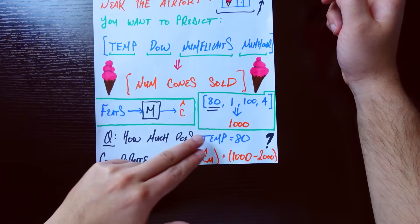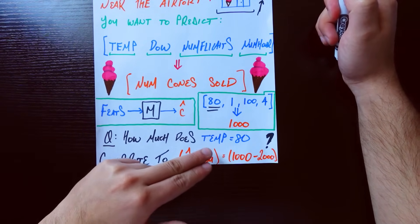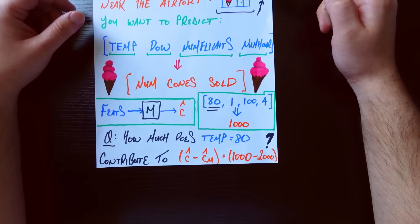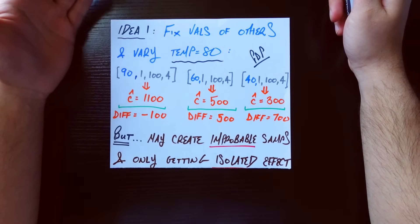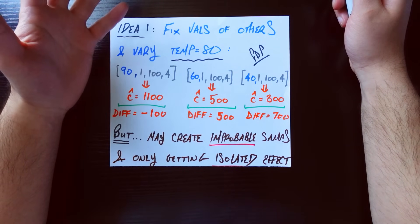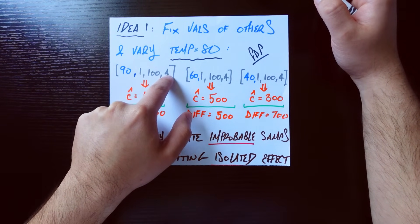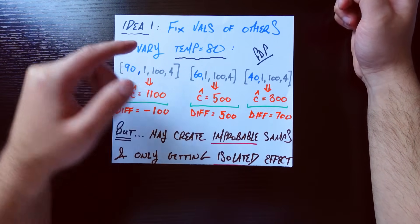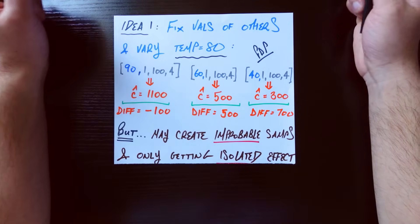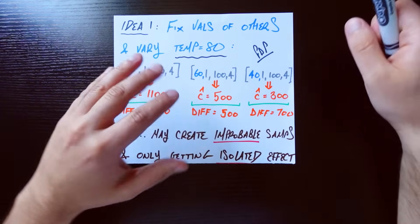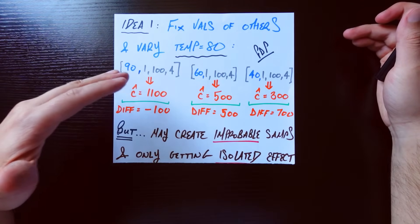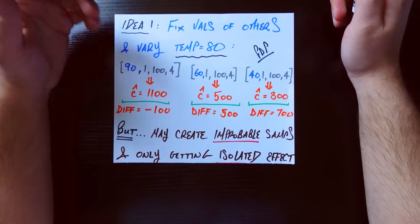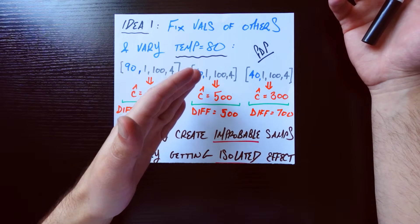Before jumping into Shapley values and formulas, let's talk about a more simplistic idea — why use something complicated if something simple does the job? Idea number one: fix the values of all the other features. Since we only care about temperature right now, we fix day of the week, number of flights, and number of hours open — that's why you see the same 1, 100, and 4 in all three of those. The only thing changing is the temperature. From the underlying data frame, we randomly sample some temperature values and place them there — these are what I call Frankenstein samples, created from pieces of other things: part from the original sample, part randomly chosen.